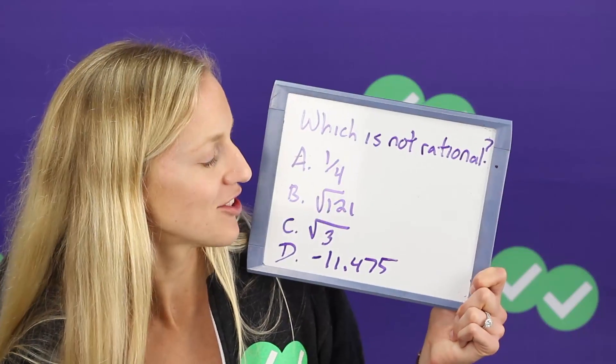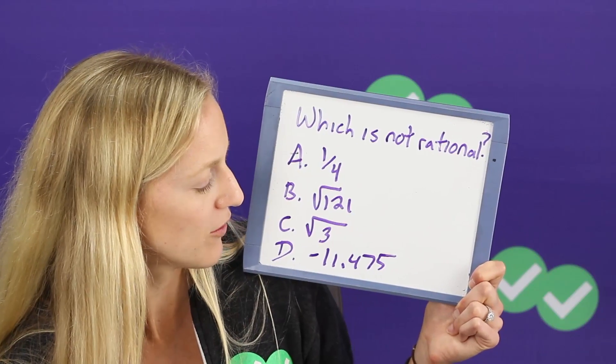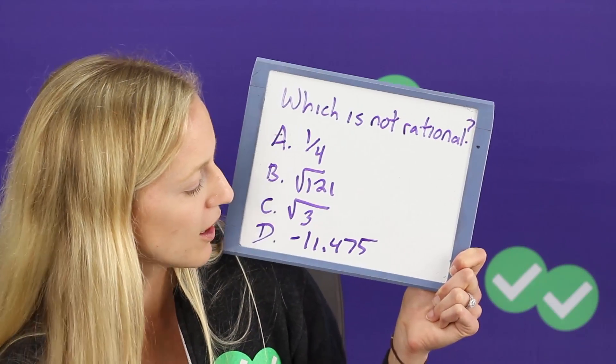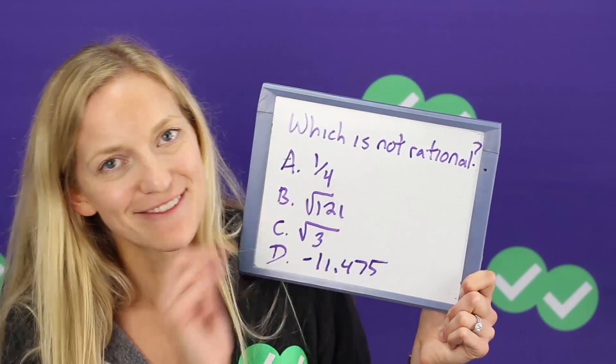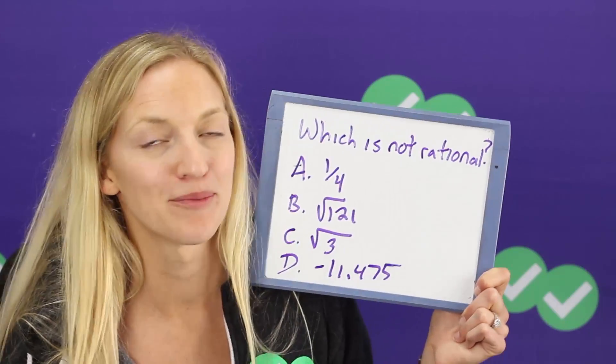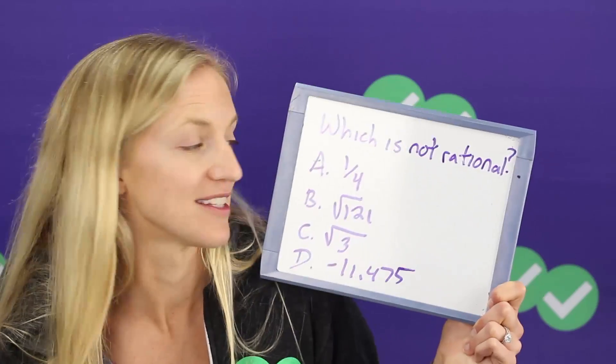Which of these is not a rational number? One fourth, square root of 121, square root of 3, or negative 11.475? One fourth, easy. It's a fraction. So that's rational. Remember that's the definition of rational numbers. Can be expressed as a fraction.